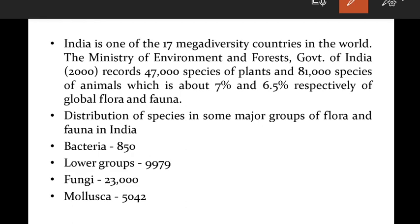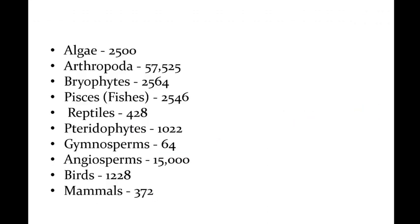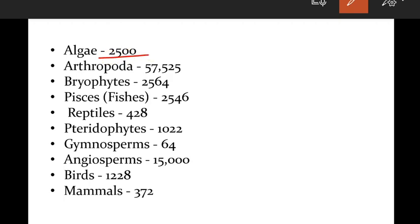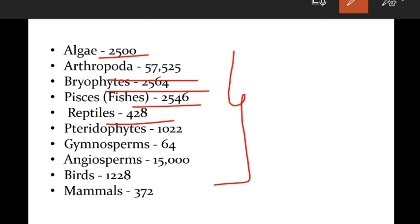In India, there are 850,000 species. Fungi account for 23,000 different varieties of species, Mollusca 5,042 varieties, Arthropoda around 2,500 varieties, Bryophytes 2,564 varieties, Fishes 2,546 varieties, Reptiles 428 varieties, Pteridophytes, Gymnosperms, Angiosperms, Birds 1,228 varieties, and Mammals 372 different varieties distributed in India.